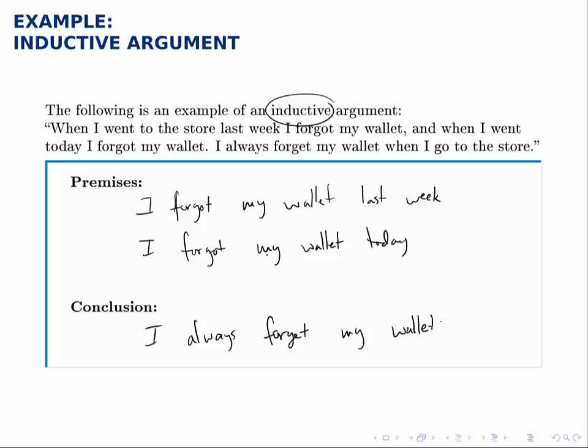Notice this is a pretty weak inductive argument because we're only working from two instances. If this happened every single time for a thousand times, then that might be a stronger inductive argument. But the fact that it only happened twice is pretty weak. An inductive argument always works from specific premises to a general conclusion.